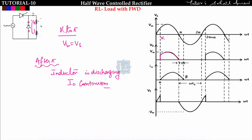Without the freewheeling diode, some energy is fed back to the supply and some dissipated in R. With the freewheeling diode, all energy dissipates in R, so the decaying rate of inductor current becomes lower. This allows the inductor current — i.e., load current — to become continuous. By decreasing the time constant of the decaying equation I0(t), continuous conduction mode can be achieved, as discussed in lecture 9B.